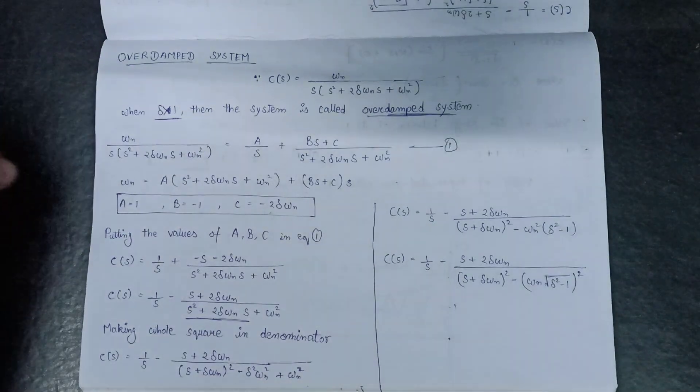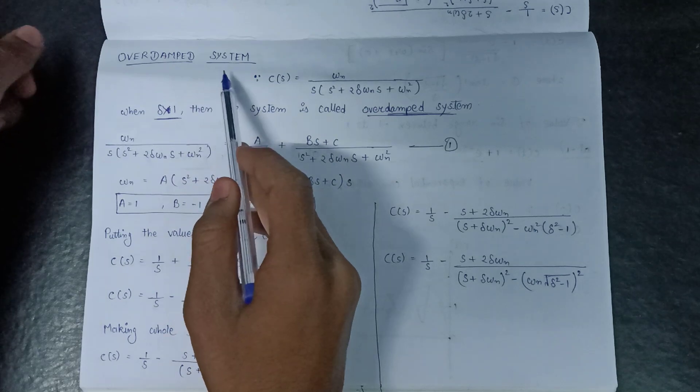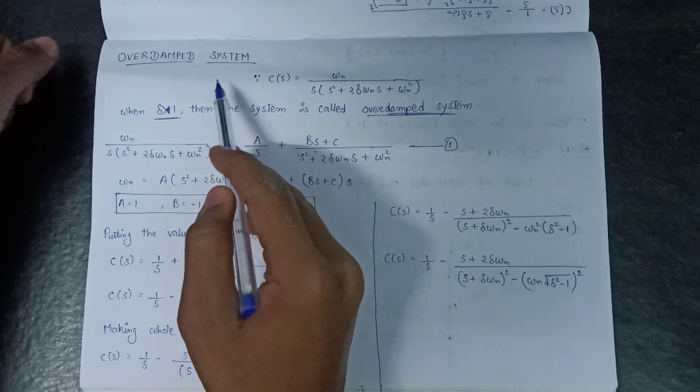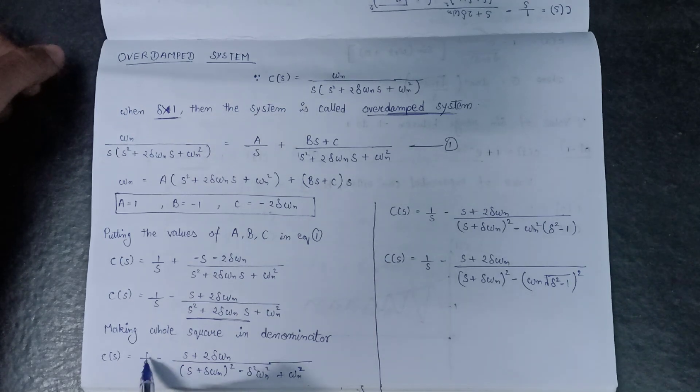Welcome all. There is a correction in the over-damped system that we studied in the previous video. This is the term that we evaluated: C(s) equals 1 over s minus delta plus